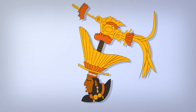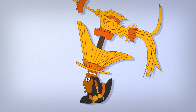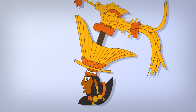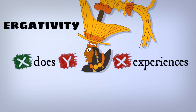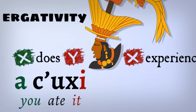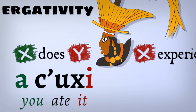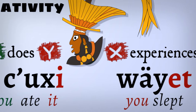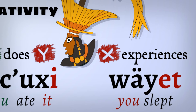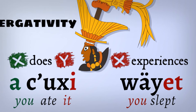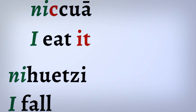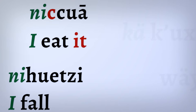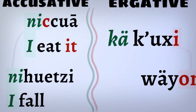Transitivity is an even bigger player in Mayan, beyond just the shape of the verb. In some tenses and aspects, Mayan displays something called ergativity. The short story: if a Mayan verb is intransitive, then its subject looks like an object. Take a transitive verb, 'acuxi', where you are the subject. You're still the subject in the intransitive verb 'weyet', even though you look different. This sets Mayan apart from both English and Nahuatl, since we use the same subjects for transitive and intransitive verbs — I am the same in 'I eat it' (ni-kwa) and 'I fall' (ni-wetsi).